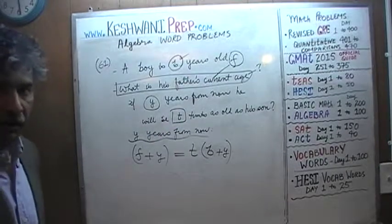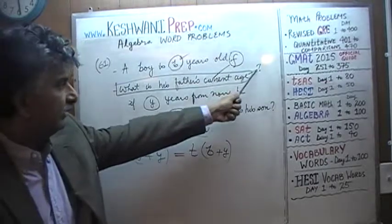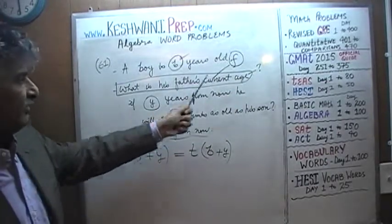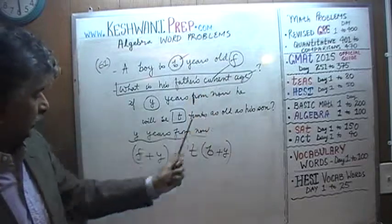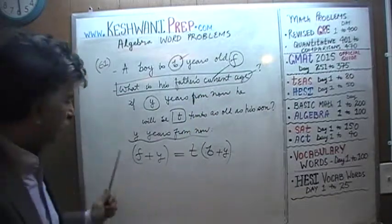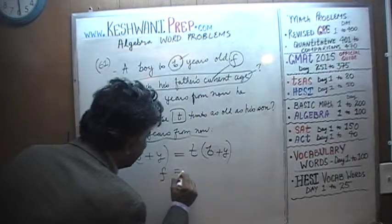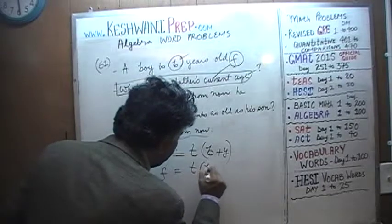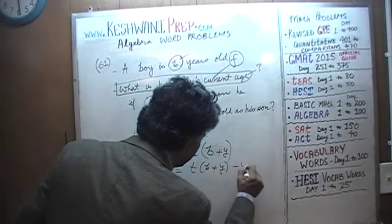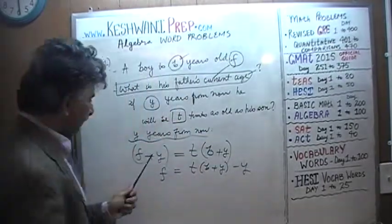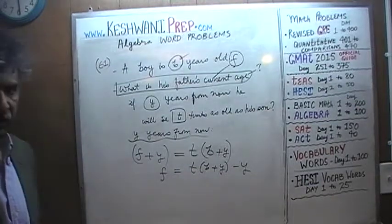All we have to do is solve for our unknown, which is the father's age represented by letter F. So we subtract Y from both sides, and F is going to be equal to t times (b plus y) minus y. Subtract Y from both sides and this Y appears there. That's our answer.